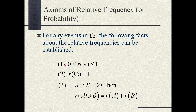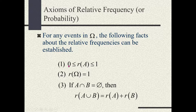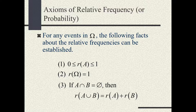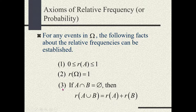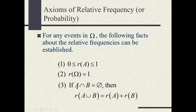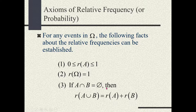The second axiom is that the probability of the entire sample space omega is one. This is similar: if you roll a die, the probability that the outcome is between one and six is one hundred percent, or a probability of one. You can relate probability with percentages: 100% corresponds to a probability of 1, and 0% corresponds to a probability of 0. For example, if 65% of a class are female, the probability of selecting a female is 0.65.